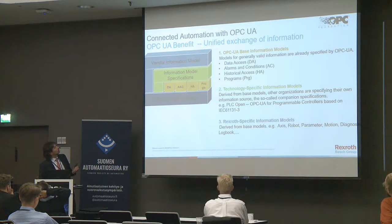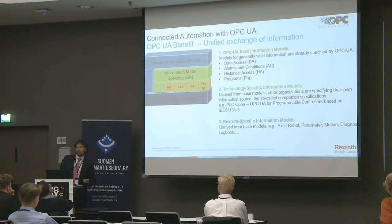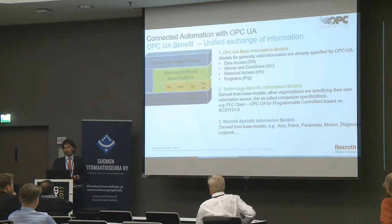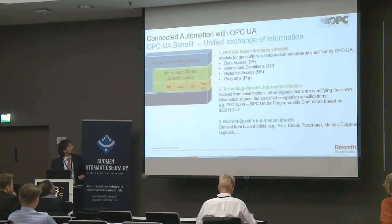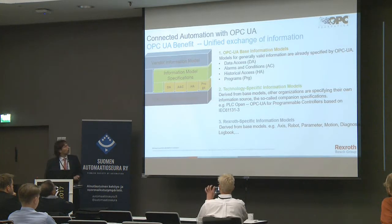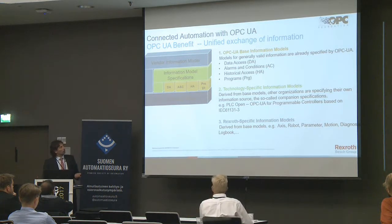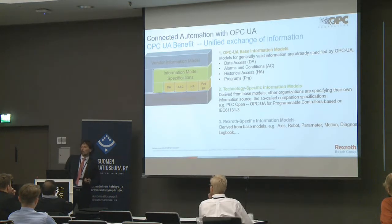On top of that, you see the information model specifications, where you find the technology-specific information models. A good example of these so-called companion specifications is the PLCopen specification. And on top of that, we have a large amount of Rexroth-specific information models derived from the base model. We support models for axes, robots, parameters, motion, and diagnostics. We also offer our internal logbook in an OPC UA-compliant version.